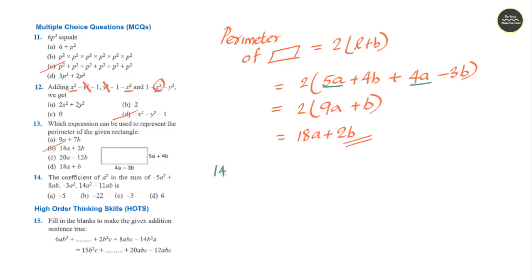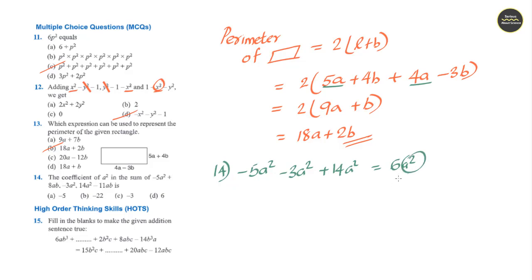Question 14: The coefficient of a square in the following terms. Grouping all a square terms: minus 5a square minus 3a square plus 14a square. Minus 5 minus 3 is minus 8; minus 8 plus 14 gives 6a square. To find the coefficient, we exclude a square. Answer is 6, which is option d.